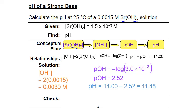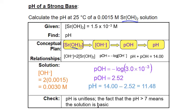We'll do a check on how reasonable this is. pH is always unitless, so we have no units here. And since we're looking at a basic solution, we expect to have a pH greater than 7, and that's exactly what we see with 11.48.